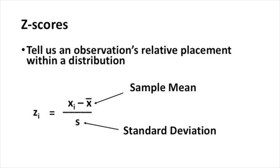One way of determining whether or not an observation is an outlier is to calculate its z-score. The z-score tells us an observation's relative placement within a distribution. Here's the formula: z_i equals x_i — that's the value of the observation you're interested in — minus x-bar, which is the mean, divided by s, which represents the standard deviation.